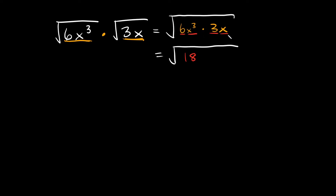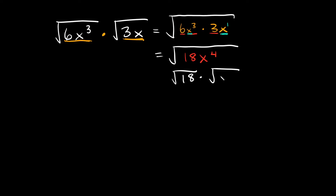Then we have x cubed times x, which is equal to x to the fourth. Whenever you're multiplying variables with the same base, you just add the exponents together. There's a 3 on the x cubed and technically a 1 on the x, so 3 plus 1 equals 4 — giving us x to the fourth. Now that we've combined everything, we split it up into the square root of 18 times the square root of x to the fourth.